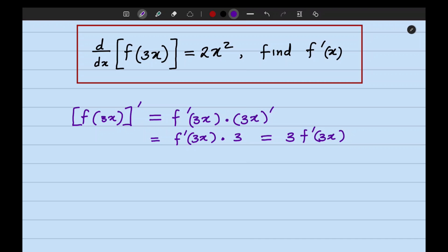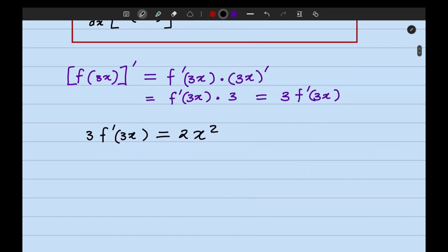But the question says when you get this derivative, you're going to get 2x squared. So that simply means 3f prime of 3x is equal to 2x squared. What really is f prime of 3x? If you divide both sides by 3, we're going to end up with 2 over 3 x squared.